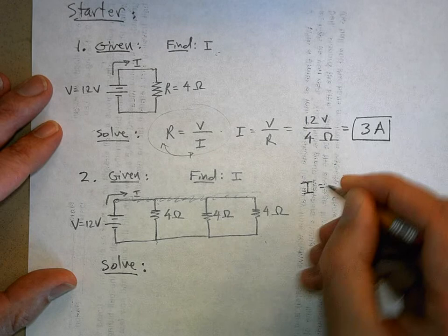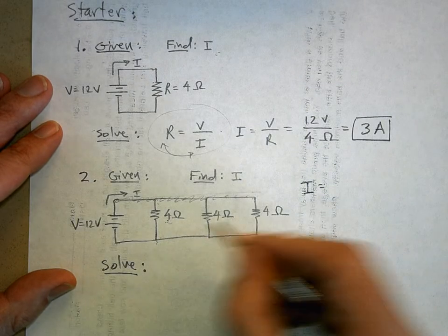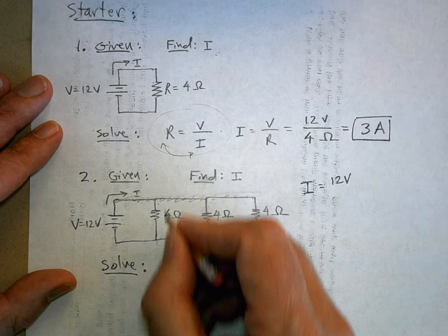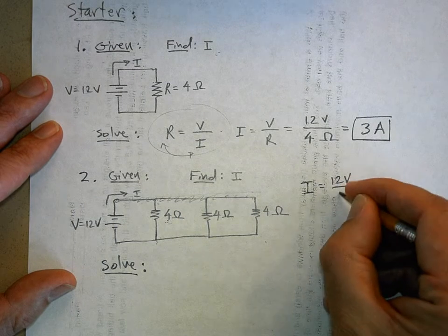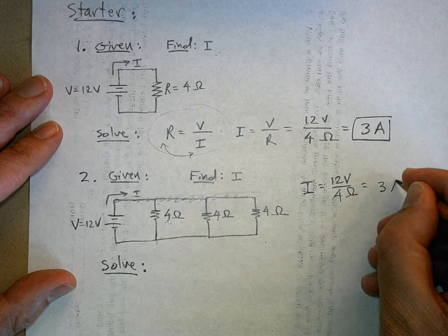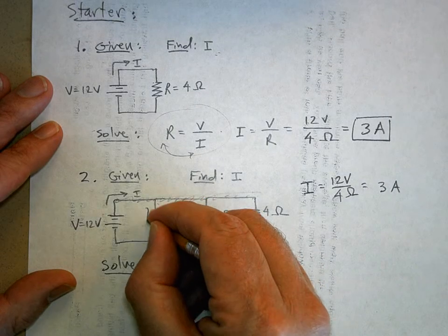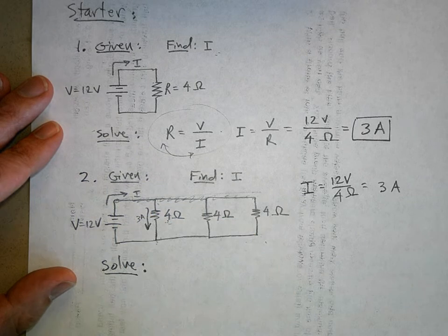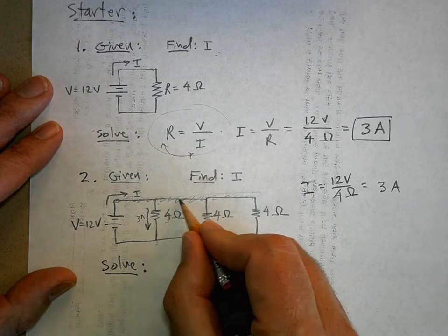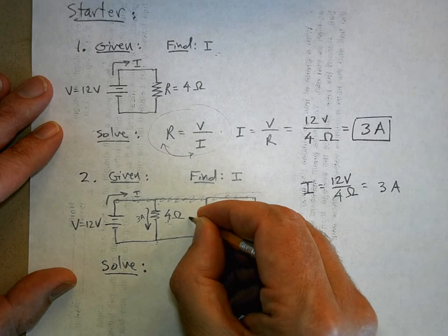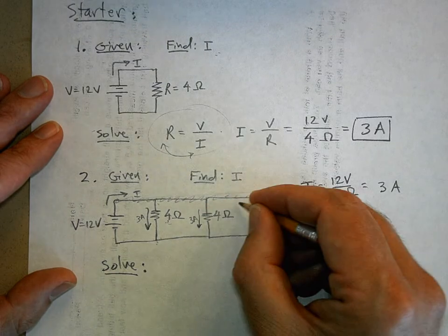I know that the current for this guy is going to be equal to 12 volts divided by 4 ohms, so that's going to be 3 amps. That's 3 amps through here, 3 amps there, 3 amps through this guy, and 3 amps through this guy.